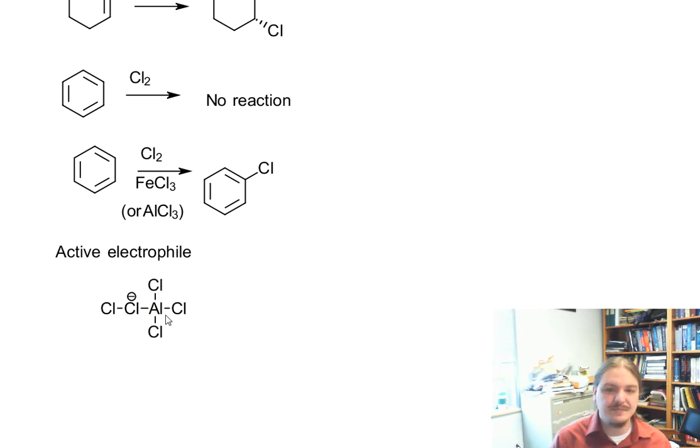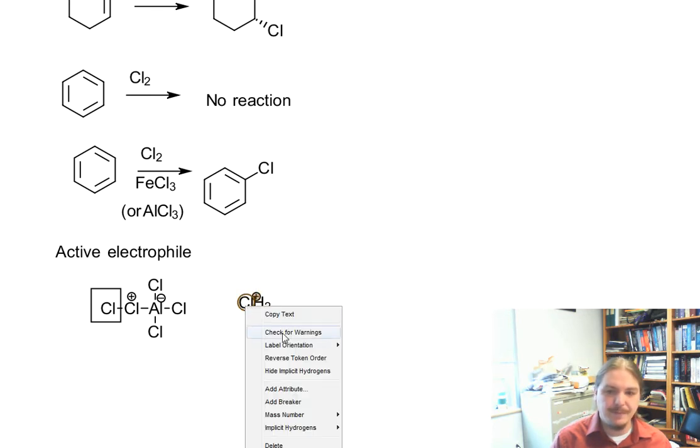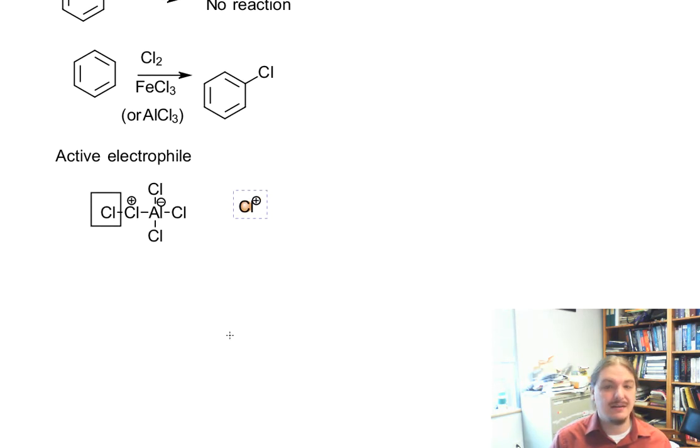There we go. Here is the active electrophile. And the active part of the electrophile, even though there's a positive charge on the chlorine in the middle, is actually this end chlorine. And so this thing acts a little bit like it was a Cl+ cation, which is a silly looking thing indeed.